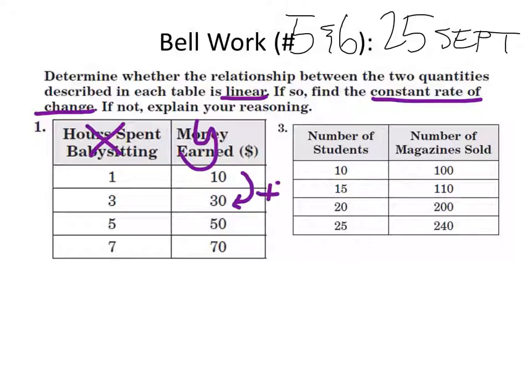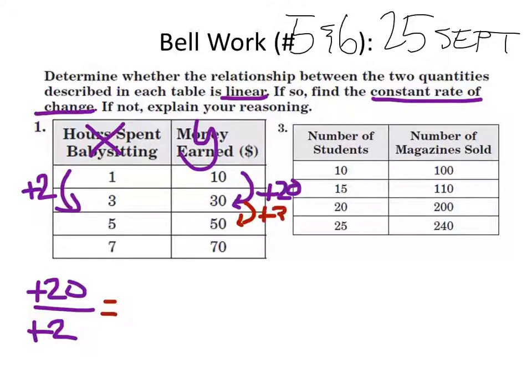So let's look at the change in Y. This one is up 20. So I'm going to make this a fraction of up 20 divided by change in X, which is up 2. If we were to simplify this fraction, what would we get? 10.